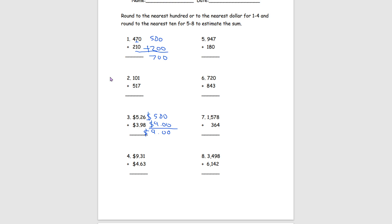Moving over to number 5, this time we're rounding to the nearest ten to estimate the sum. The same rules apply but now we're looking at the ones place. For 947, the digit 7 means we round up, so this becomes 950. For 180, the 0 means we keep it as 180. Adding 950 and 180: 0 plus 0 is 0, 5 plus 8 is 13 so we put 3 and carry 1, 9 plus 1 is 10 plus 1 equals 11. So our answer for number 5 is 1,130.